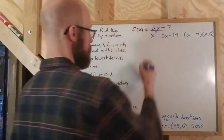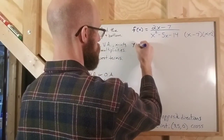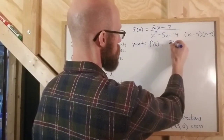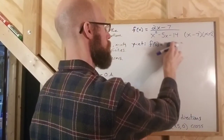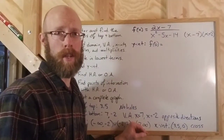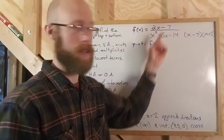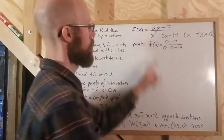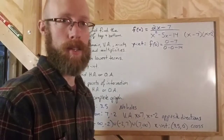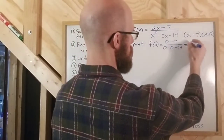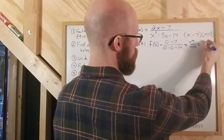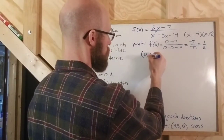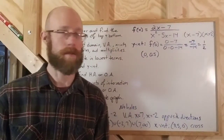Step four looks for a y-intercept. With a y-intercept, you set x equal to zero, so you're finding f of zero. Any term with an x will become zero, so you get zero minus 7 on top and zero minus zero minus 14 on the bottom. That simplifies to negative 7 over negative 14, which reduces to one-half or 0.5. So the y-intercept is at zero comma 0.5.